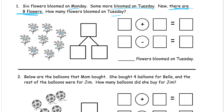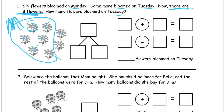Six of these bloomed on Monday — that's one through six, all of these. These are all Monday flowers; M for Monday. Sorry about the sloppy M, but these are all Monday's flowers. The rest of them had to have bloomed on Tuesday because they're not Monday, so those have to be the Tuesday flowers. How many bloomed on Tuesday? You can see there's two right there.